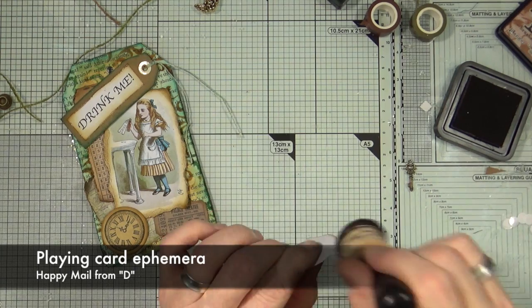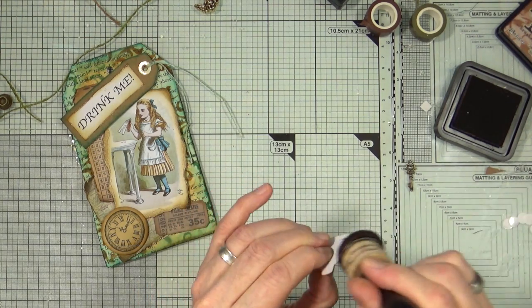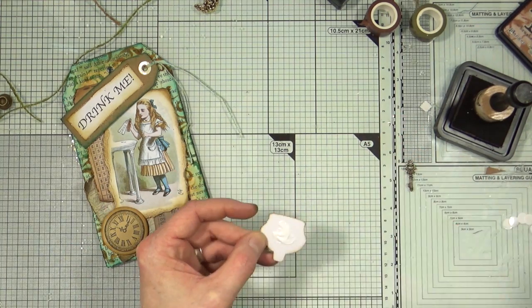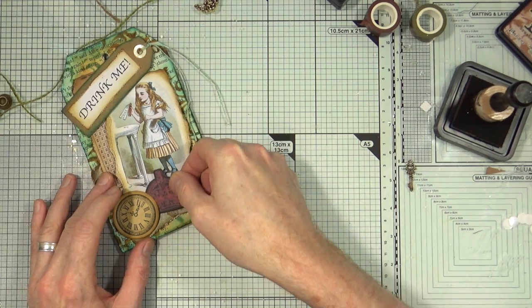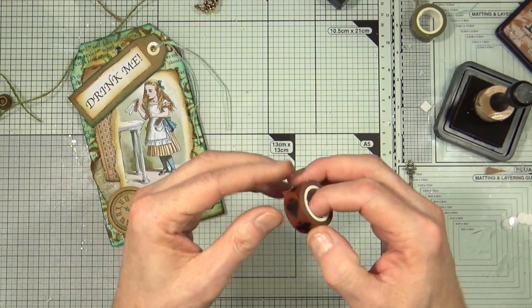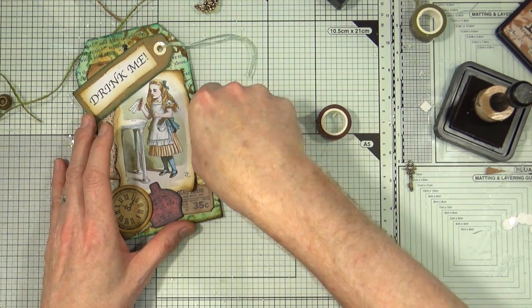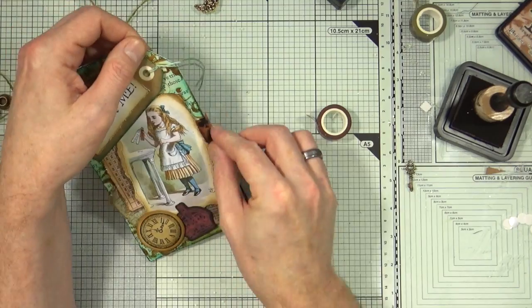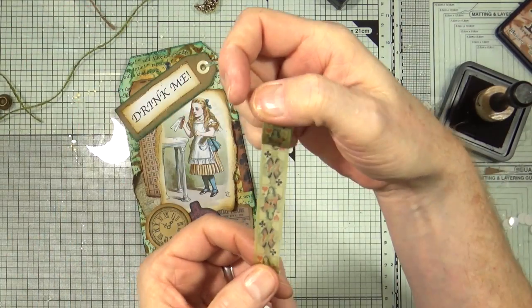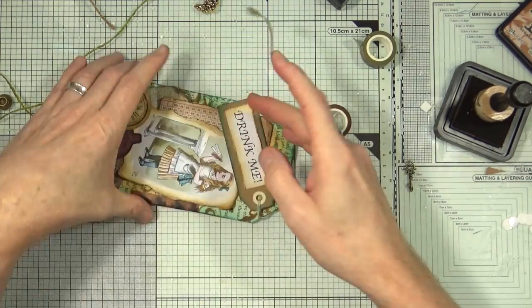Next up, time to add some more ephemera. This time I found a lot of playing card related ephemera in some happy mail that was sent to me recently by an anonymous donator, all I know is that they have the initial of D. I found the red crown which signifies the queen in Alice in Wonderland. I've also found some washi tape with the playing card symbols on them, you've got the spades and the club symbols, and also some washi tape that also has some playing cards on there too. I'm going to add that to help the symbolism of the Alice in Wonderland theme.